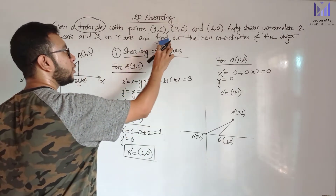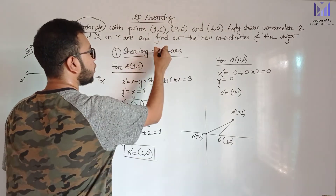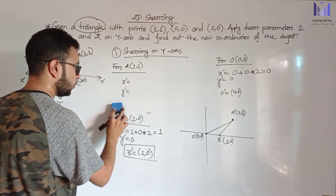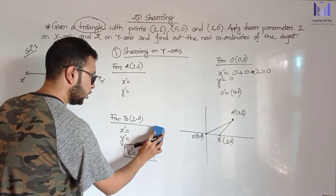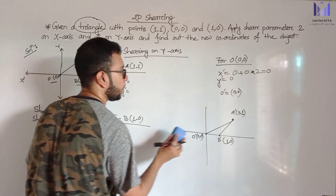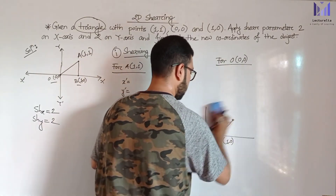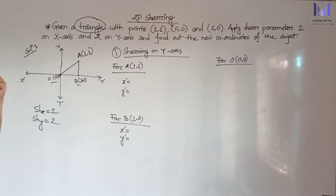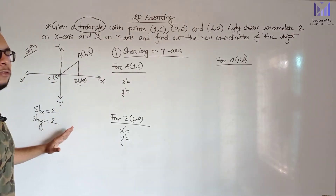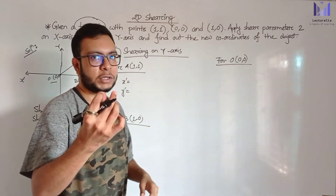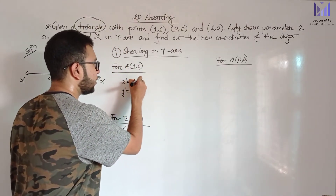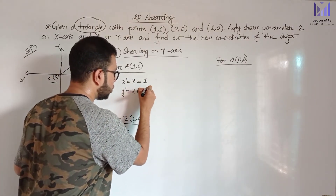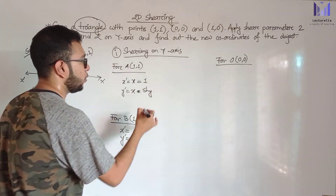For shearing on Y-axis, the equation changes. For shearing on Y-axis: X prime equals X, and Y prime equals Y plus X multiplied by shY. The shY value given is 2. So the X value stays the same and Y prime changes with the shearing parameter towards Y-axis.